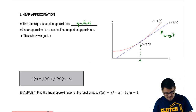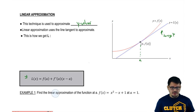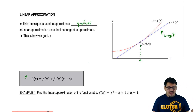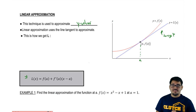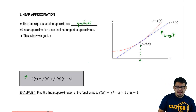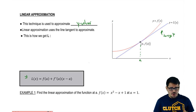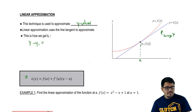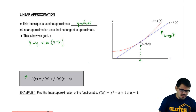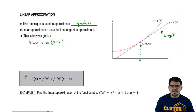That equation is given right here in this box: L of x equals f of a plus f prime of a times x minus a. And this is not a totally new formula — it's actually something you've seen before. If you remember equations of lines, there's the point-slope formula: y minus y1 equals m times x minus x1. So you've actually seen this before, but we're going to give it a little twist so we can change it into our linearization formula.